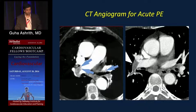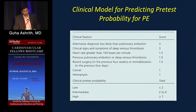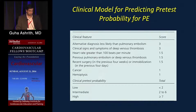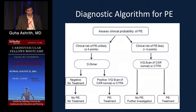This is an example of a saddle embolus on imaging. The Wells risk score for PE looks at: whether an alternative diagnosis is less likely than PE, clinical signs and symptoms of DVT — since about 70% of PE patients have a DVT — heart rate greater than 100, previous PE, recent surgery, cancer, and hemoptysis.